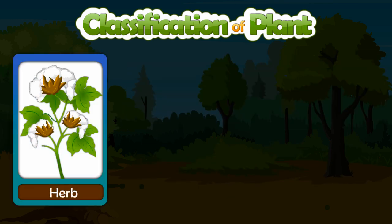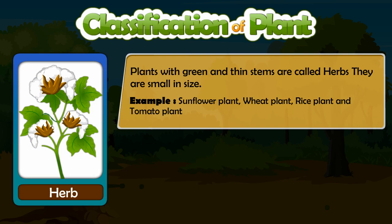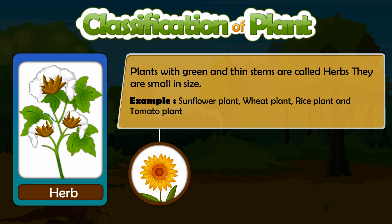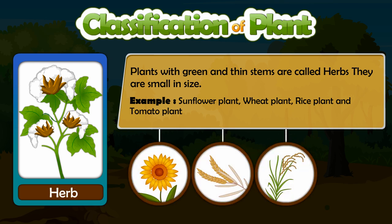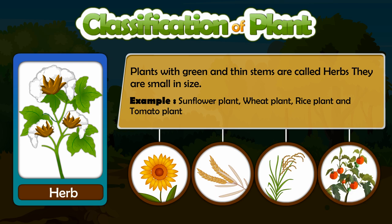Plants with green and thin stems are called herbs. They are small in size. Examples of herbs: Sunflower plant, Wheat plant, Rice plant and Tomato plant.